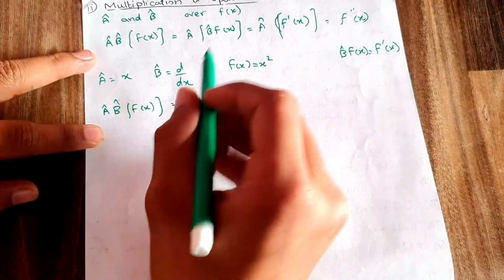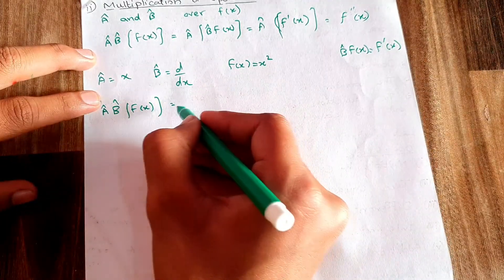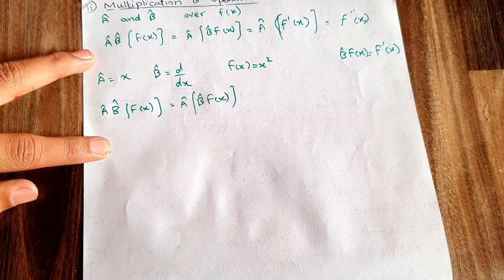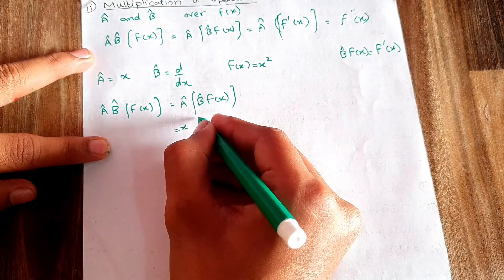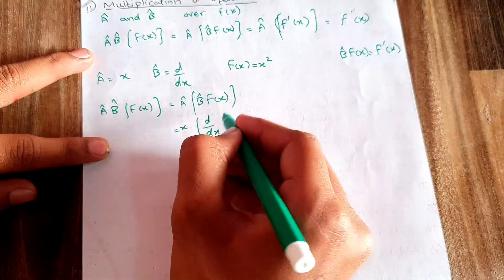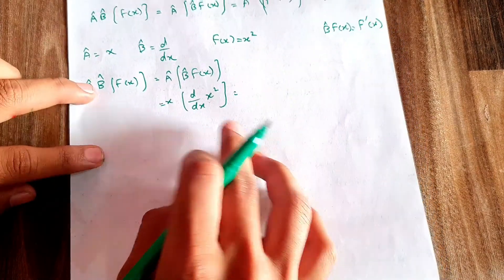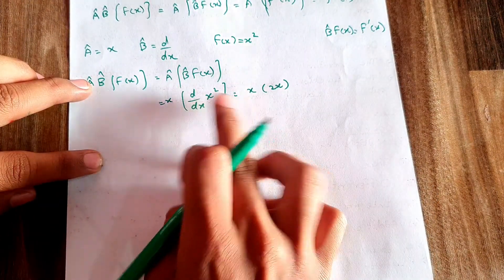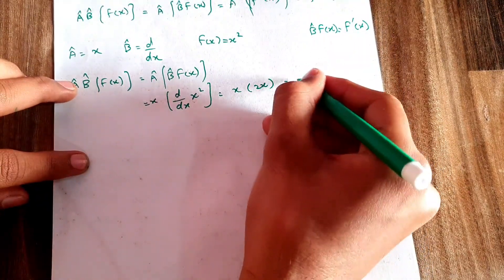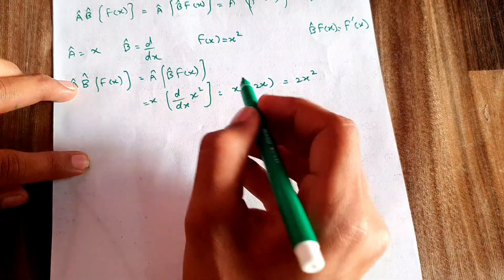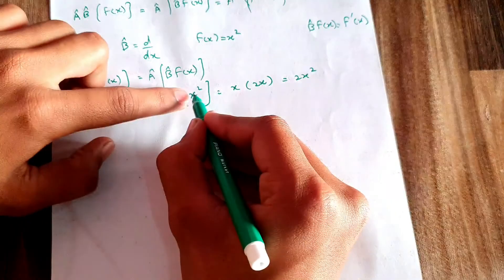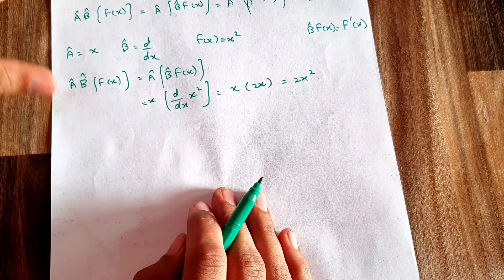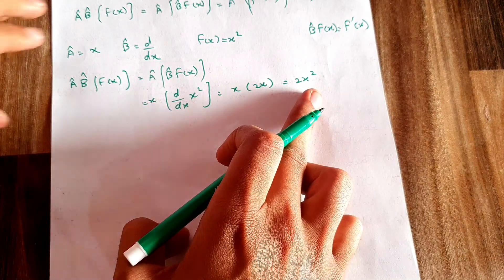Applying operator A = x, B = d/dx, on f(x) = x²: operator A (which is x) is held out, and B = d/dx is applied on x², giving the derivative 2x. Then multiplying x (operator A) by 2x gives the answer 2x². The derivative of x² uses the power rule: bring the power down and subtract 1, giving 2x.